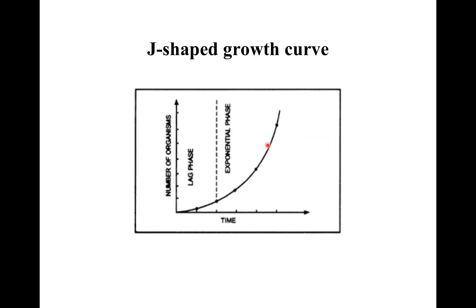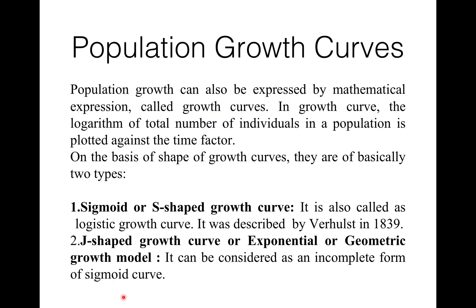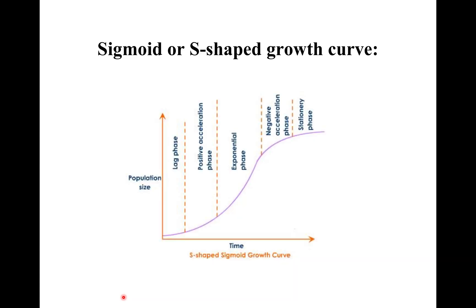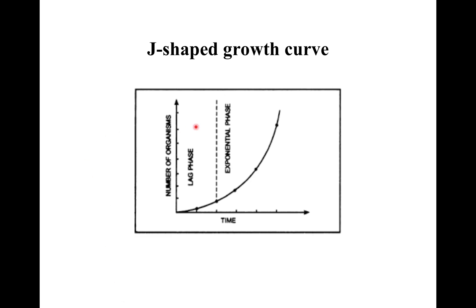The second growth curve is the J-shaped growth curve, also called the exponential or geometric growth model. It can be considered as an incomplete form of the sigmoid curve.